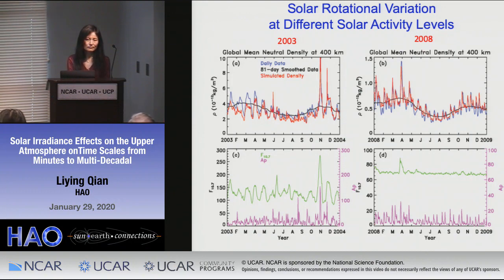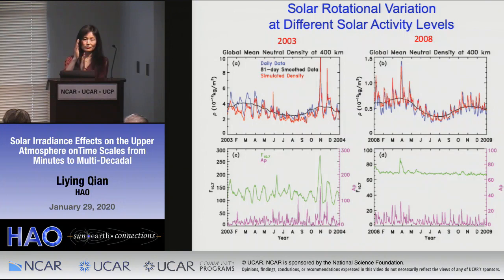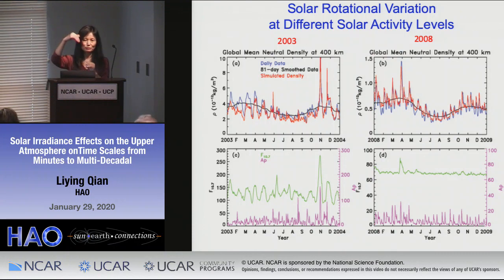Question: You mentioned the O/N2 ratio is noticeably higher in the winter hemisphere due to downwelling — is that an inertia effect of more atomic oxygen at higher altitudes being brought down? Answer: Yes, it is vertical advection. In the thermosphere, the vertical gradient of the species is very large, essentially exponential. Even with a small vertical wind, there is a very large contribution from vertical advection. At higher altitude you have relatively more atomic oxygen, so when you bring it down, you increase the O/N2 ratio.